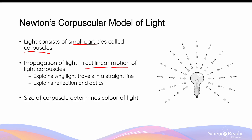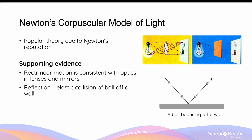Newton's model explains phenomena of light such as reflection and optics. He also proposed that the different colours of light are due to the corpuscles of different sizes. Newton's model of light was one of the earlier models and partly rose to popularity due to his prestige and reputation.